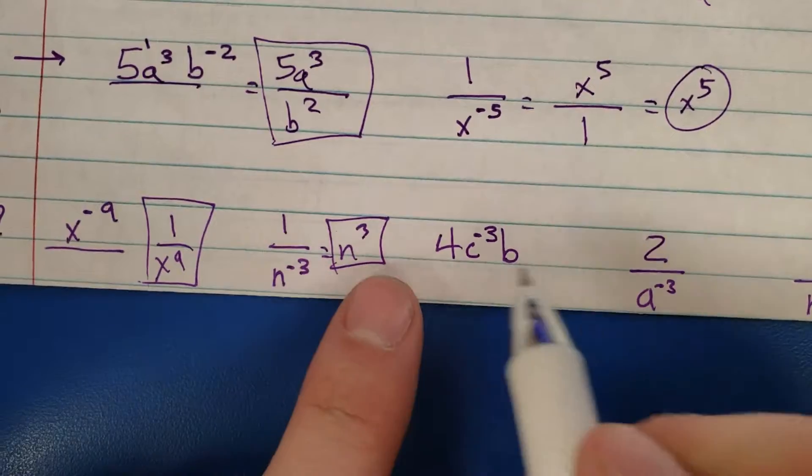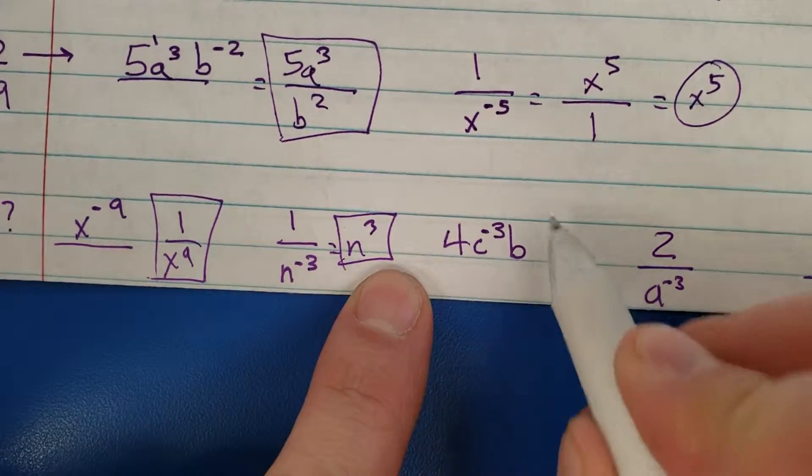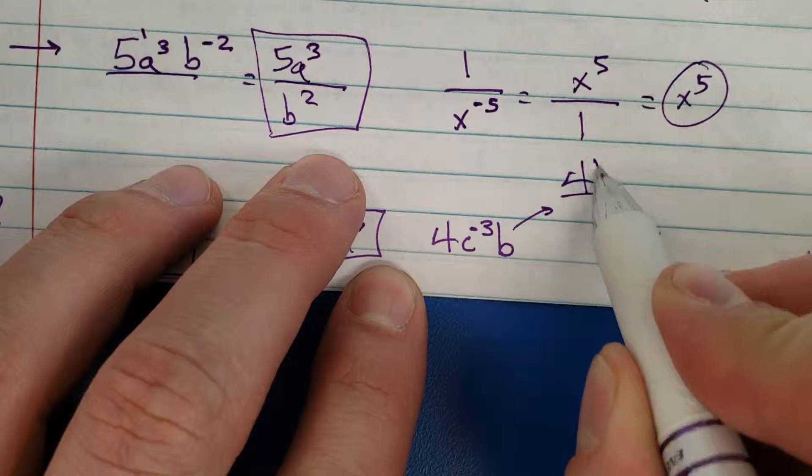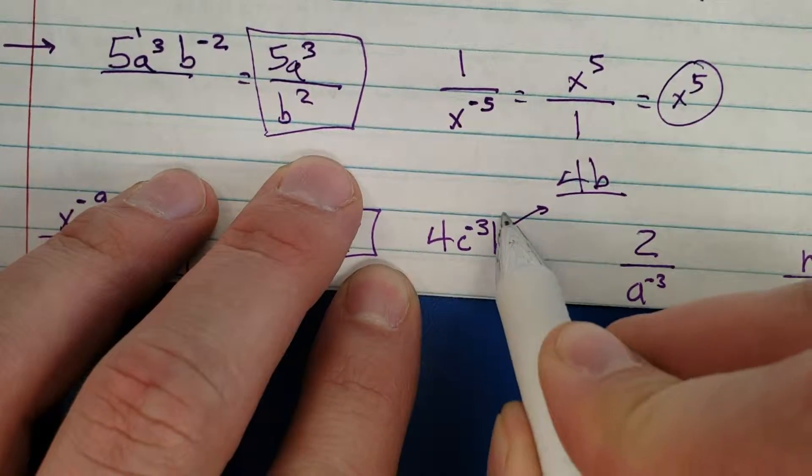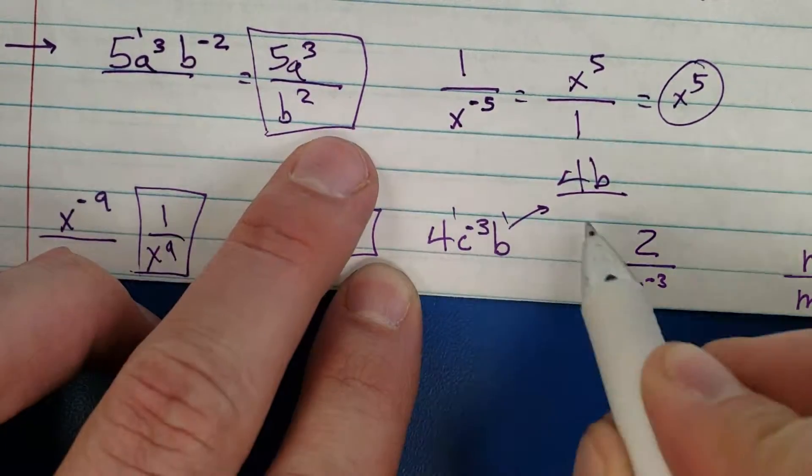Okay, ooh, four and the b are regular. I'm running out of room so I'm gonna do it up here. Four and the b stay because they have positive exponents that you just don't see. C to the three moves down.